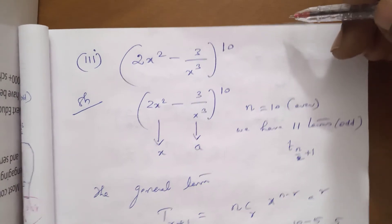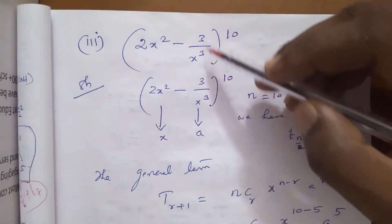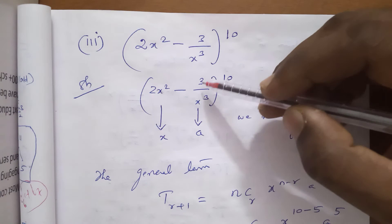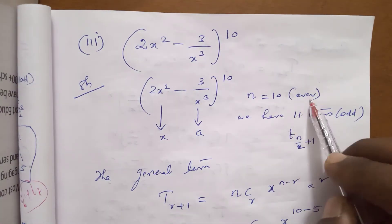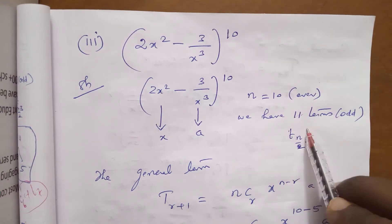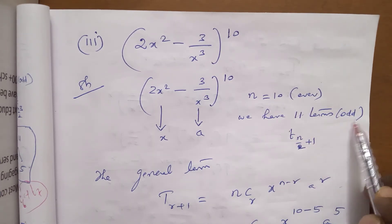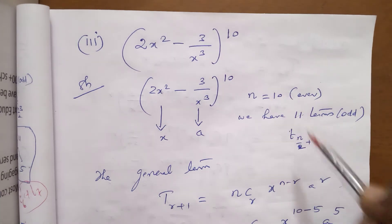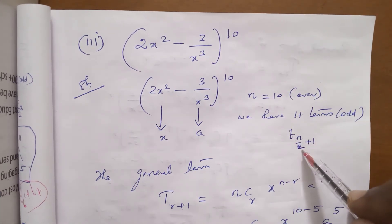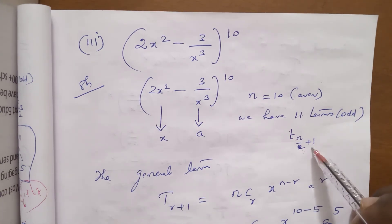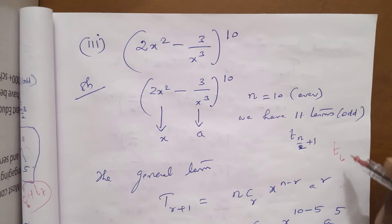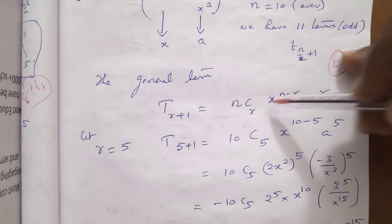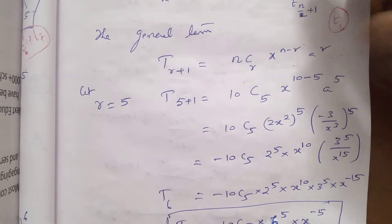Find the middle term of (2x² - 3/x³)^10. Here 2x² is taken as x and 3/x³ is taken as a, with n = 10. Adding one more term gives 11, which is odd, so we apply the single middle term formula T(n/2 + 1). With n = 10, n/2 + 1 = 6, so we compute T6.